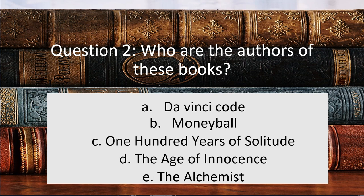Give you a couple of seconds. So A — Da Vinci Code — is Dan Brown, B is Michael Lewis, C is Gabriel Garcia Marquez, D is Edith Wharton, and E is Paulo Coelho. I don't really know how to pronounce that but something like that.